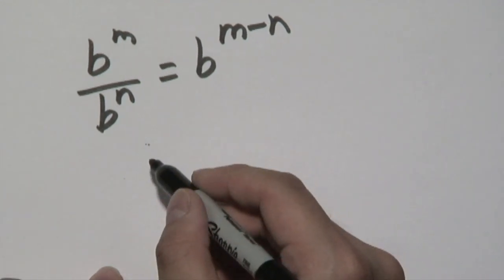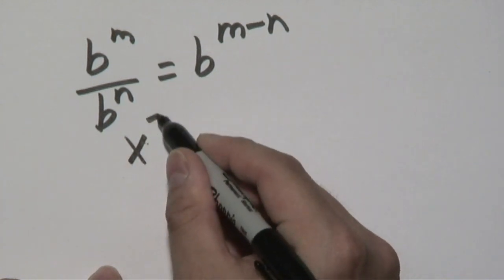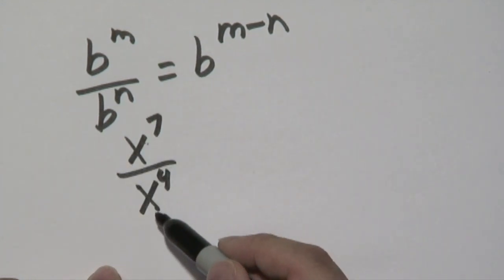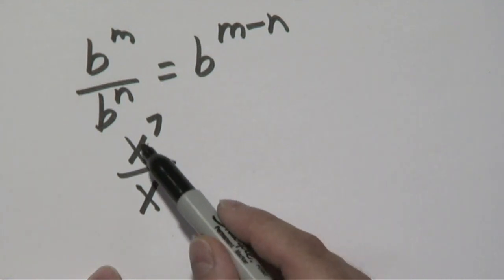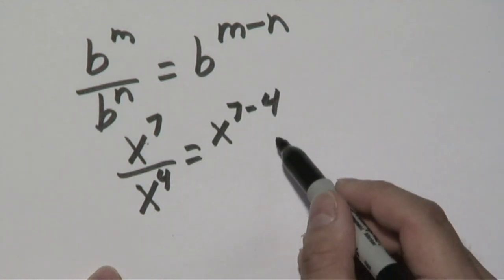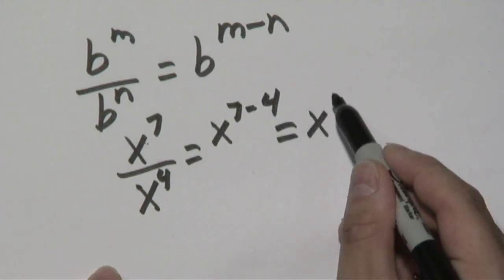So hypothetically, if you want to use this rule, if you have x to the 7th divided by x to the 4th—now remember if this was y to the 4th, you can't do it. The bases have to match. Then you would do x to the 7th minus 4, which would be x to the 3rd power.